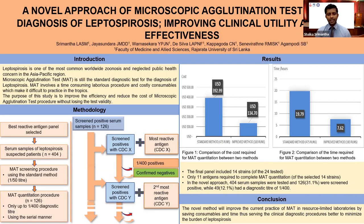The standard method required 19 hours to complete MAT quantitation, while the novel method required only 7 hours. The cost-saving percentage and time-saving percentage compared to the standard method are 66% and 61% respectively. We conclude that the novel method will improve the current practice of MAT in resource-limited laboratories by saving consumables and time, and will serve clinical diagnostic procedures better to minimize the burden of leptospirosis.